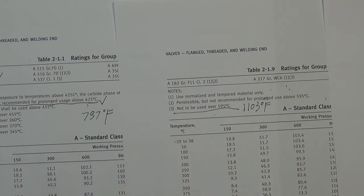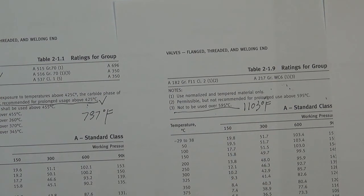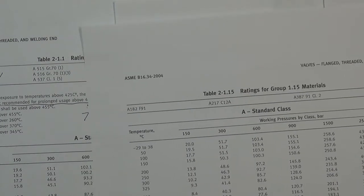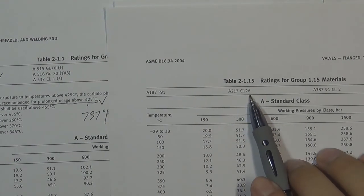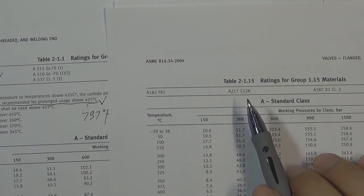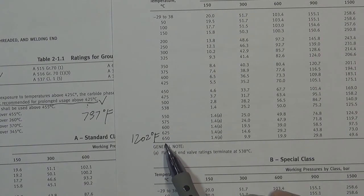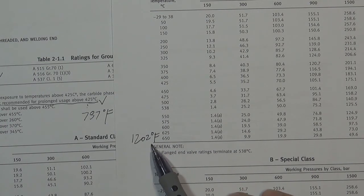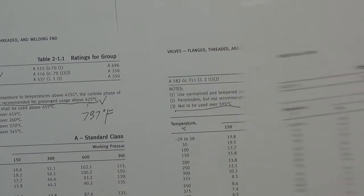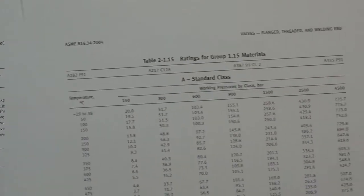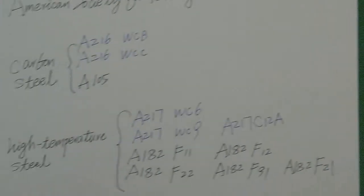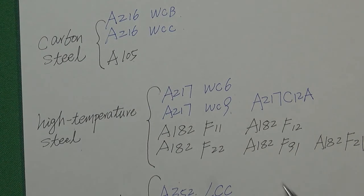Sometimes we need temperatures even higher than 595°C, so we use another material called C12A. C12A is a very special casting high temperature carbon steel that can work at temperatures lower than 615°C, equal to 1,202°F — much higher than WCB. These three materials are very commonly used in high temperature flow control systems, which is why we divide materials into carbon steel and high temperature steel groups.